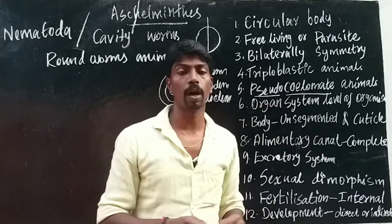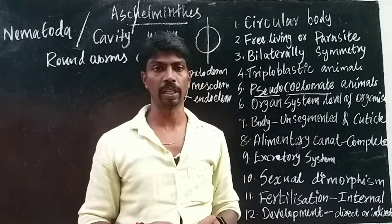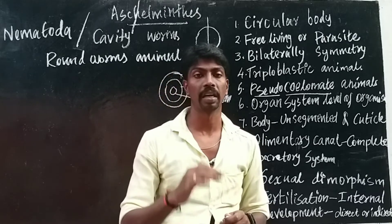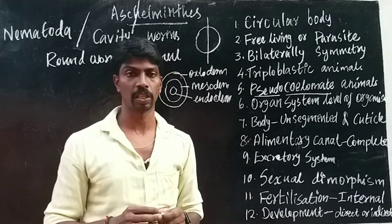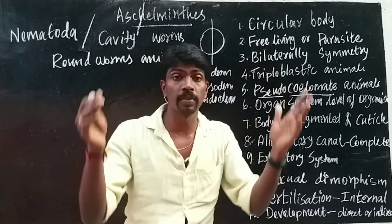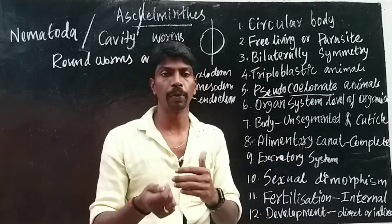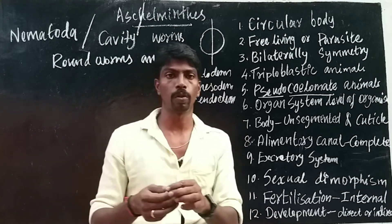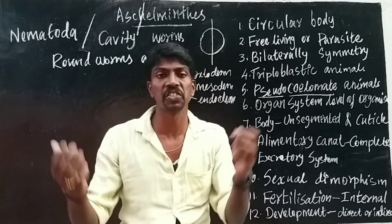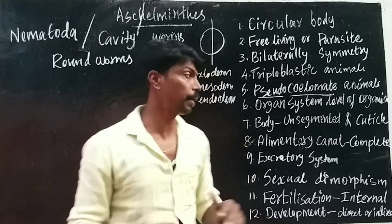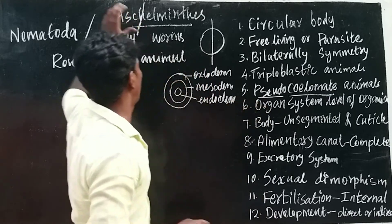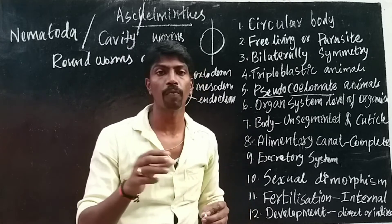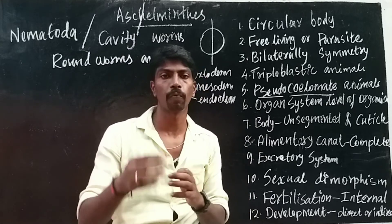These animals show organ system level of organization. A well-developed organ system is formed: a number of cells join together to form tissue, tissues form organs, and organs form organ systems. So this is the organ system level of organization in Aschelminthes.